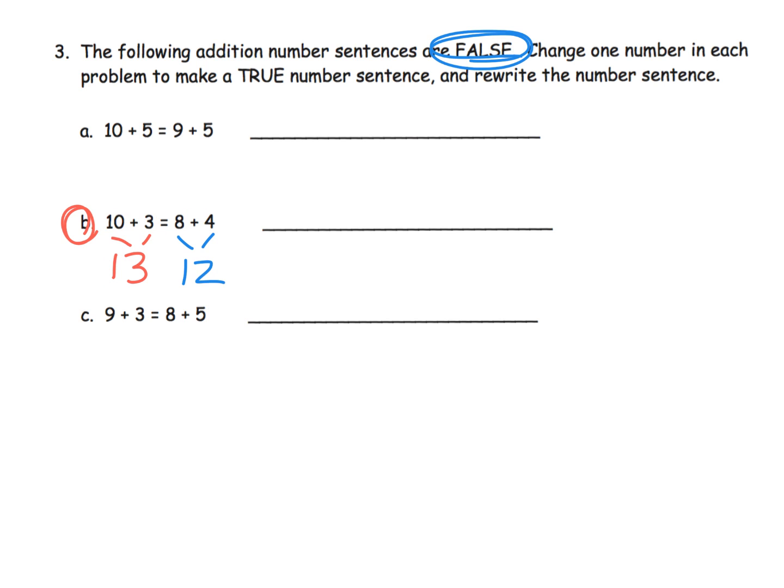13 is bigger than 12, so we can take 1 away from either the 10 or the 3, or we can add 1 to either the 8 or the 4. There's just a whole host of options. I'm going to add, so I'm going to cross off that 8 and make it a 9. So our new statement that is true will be 10 plus 3 is equal to 9 plus 4.